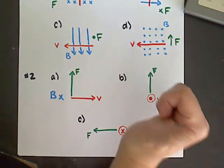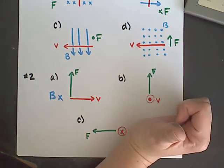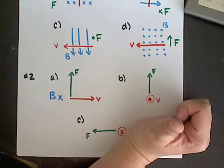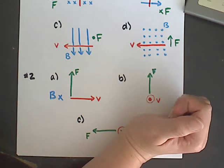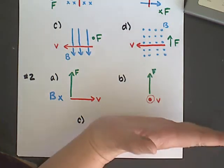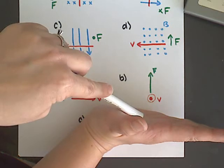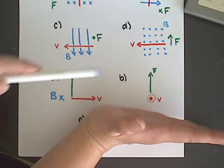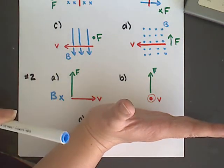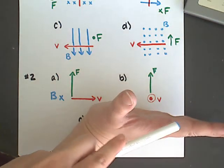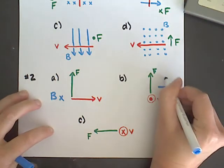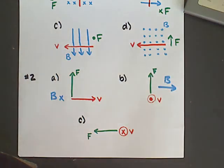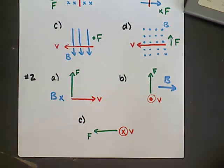For the next one, my velocity is directed out of the page, so I put my thumb pointing out of the page. The force is directed upward toward the top of the page, so I position my hand so the palm faces upward. In order to do that with my thumb still pointing out of the page, my fingers have to be pointing to the right side of the page — so that's the direction of my magnetic field.